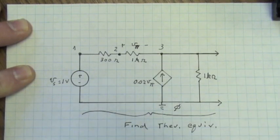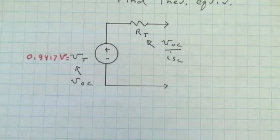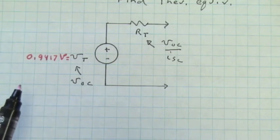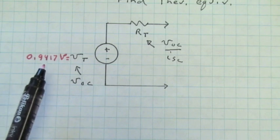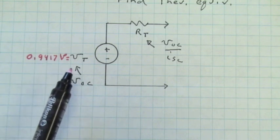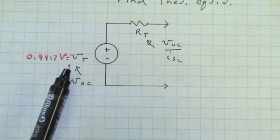Now since the emphasis here is on applying Thevenin's theorem to such circuits, I'm not going to go through the details of node voltage analysis now, but let me use SPICE to solve for those node voltages. And when I do that, SPICE tells me that the node voltage at node 3, which is the open circuit voltage, is 0.9417 volts. We know that that's the Thevenin equivalent voltage.